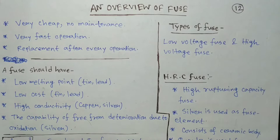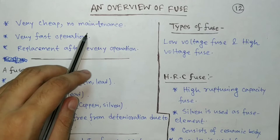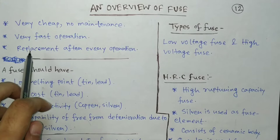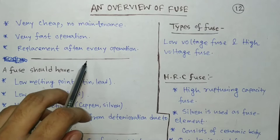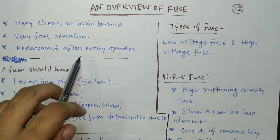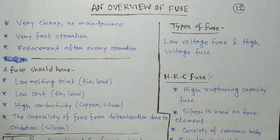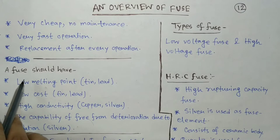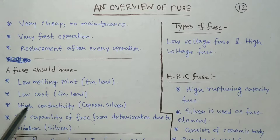Advantages of fuse: it is very cheap, no maintenance is required, and very fast operation - even faster than circuit breakers. However, one drawback is that replacement after every operation is required. Every time it is used, it gets melted, so another new fuse has to be inserted in place of the older one. This takes time.